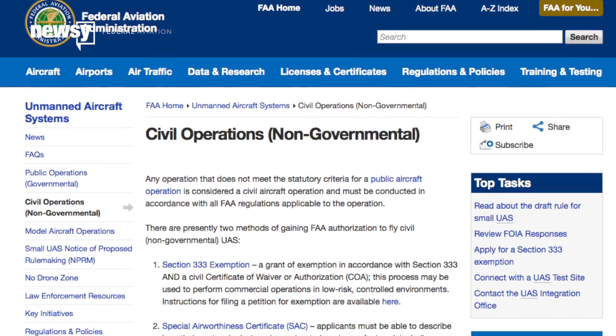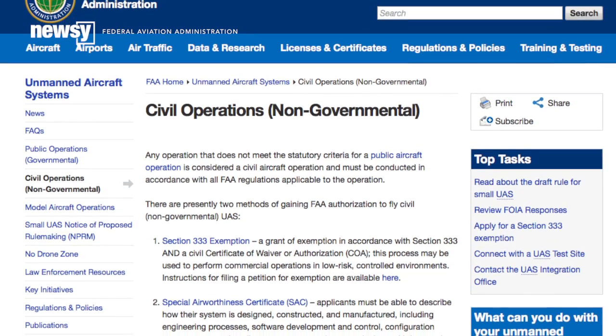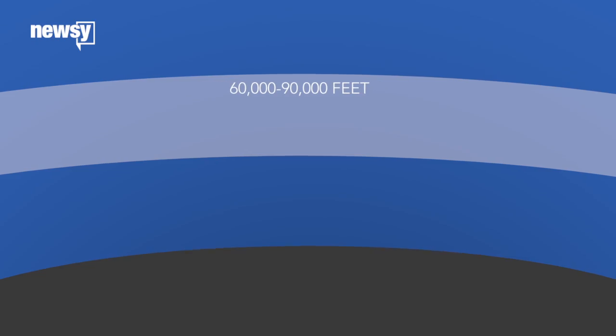The FAA issues special exemptions for flying in low-risk controlled environments, but it's not clear if a 30,000-foot slice of the entire planet's atmosphere qualifies.